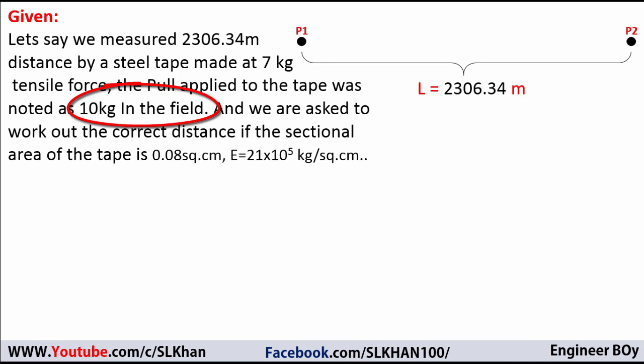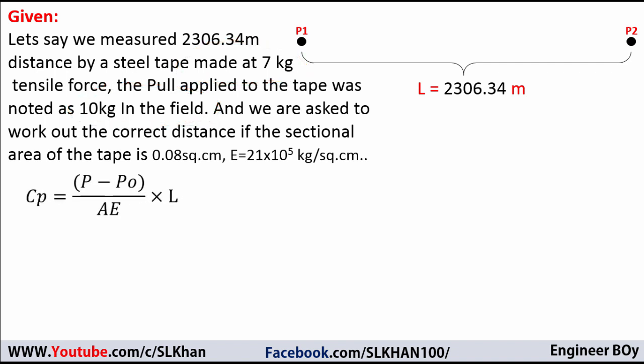The modulus of elasticity of the tape material is 21 times 10 raised to the power 5 kg per square centimeter. As you can see, the pull applied to the tape in the field is different from the pull at which the tape was made, so we need to calculate the pull or tension correction first, which is given as Cp equals P minus P₀ times L divided by A times E.